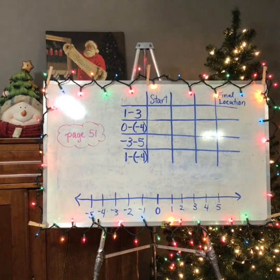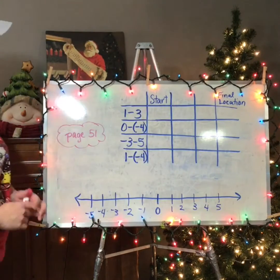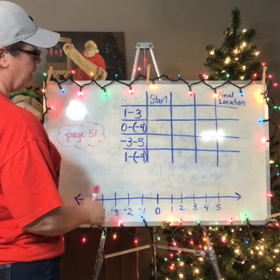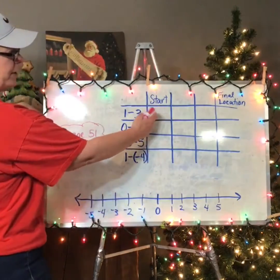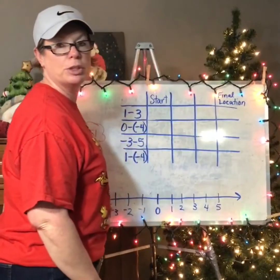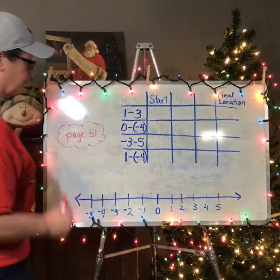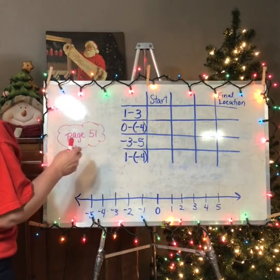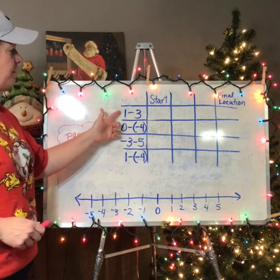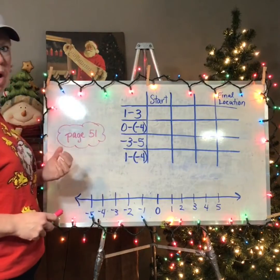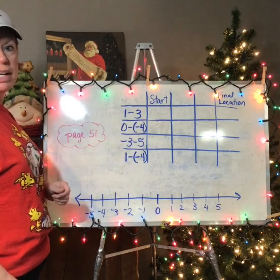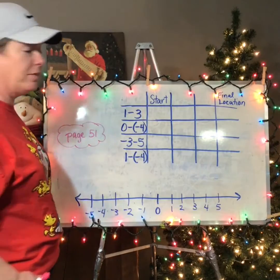Take a look at the chart on page 51. You have a table and we're going to figure out where to start on the number line and our final location, which would be our answer. The first one is 1 minus 3. If you think about it, if you start with one dollar and then you spend three or take three away, you're going to end up negative.